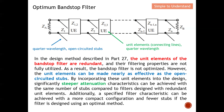Additionally, specific filter characteristics can be achieved with a more compact configuration and fewer stubs when using the optimum method. For example, if we previously needed five open circuit stubs, using the optimum method can reduce that to three, which reduces the size of the filter, making it more compact. This optimum design for the band stop filter is also much easier to implement compared to the Part 27 series discussion.